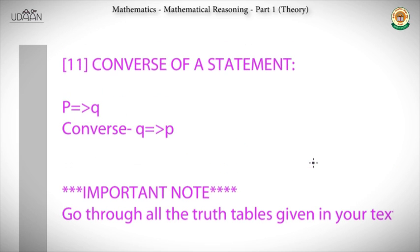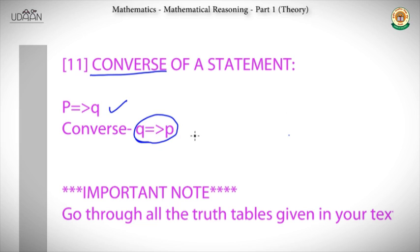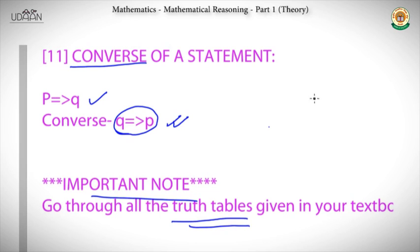The converse of a statement p implies q is simply q implies p. Remember the difference: contrapositive negates and swaps both parts, while converse just swaps them. In exams, you may be given a statement and asked for the converse or contrapositive. Finally, go through all the truth tables in your textbook — for p and q, p or q, and so on. You don't need to memorize them, but going through them once will help you grasp questions better.